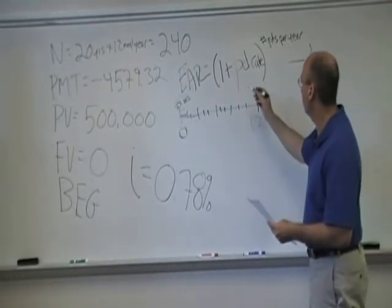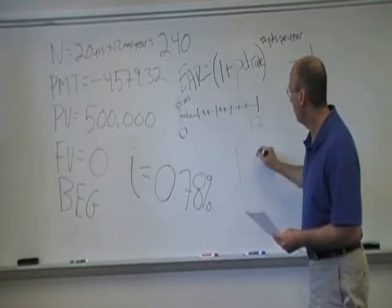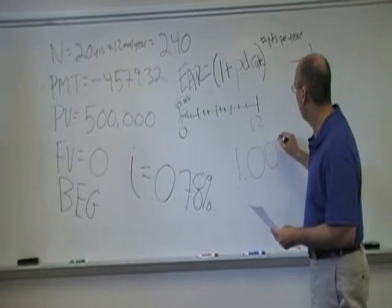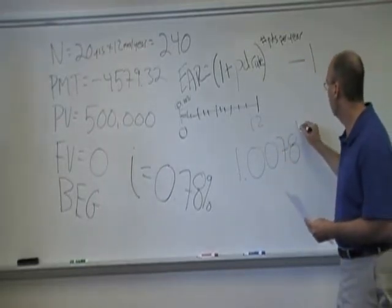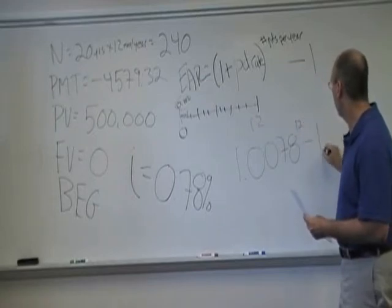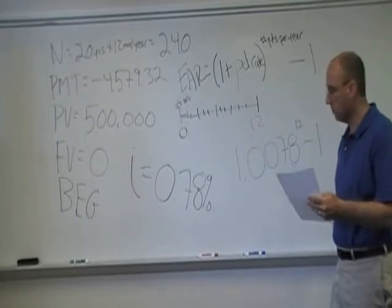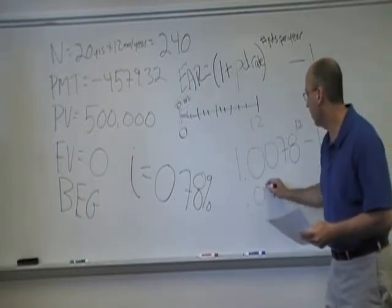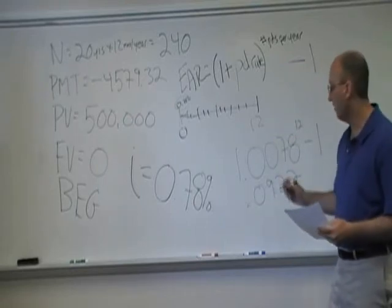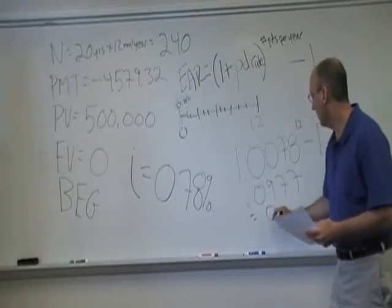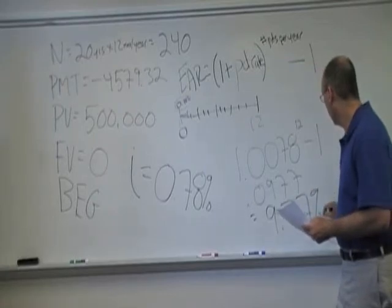So in this case, the periodic rate is 0.78%. So it's 1.0078. There's 12 months in a year. Take that to the power of 12. Then you want to subtract 1. And if you do that, you get 0.0977. So the EAR for this loan is 9.77%.